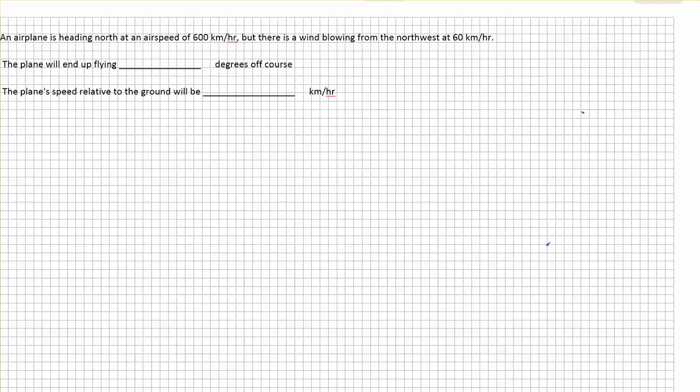An airplane is heading north at an airspeed of 600 kilometers per hour, but there is a wind blowing from the northwest at 60 kilometers per hour.